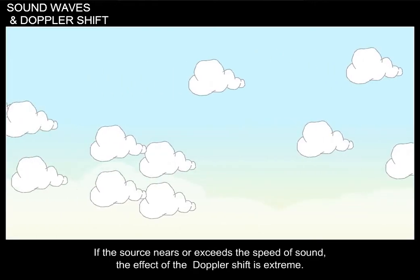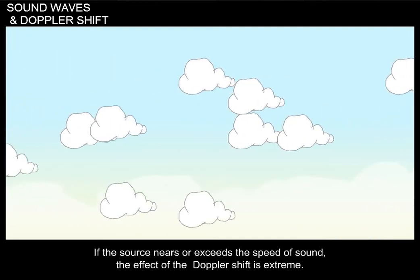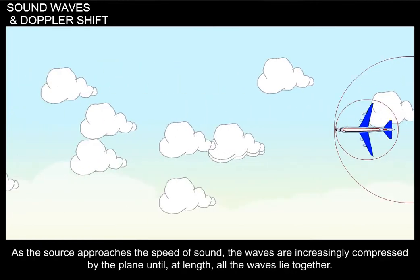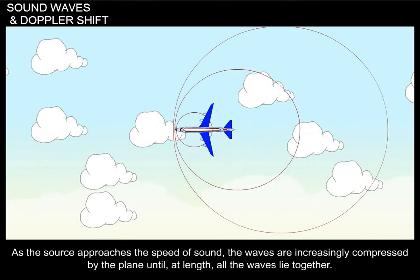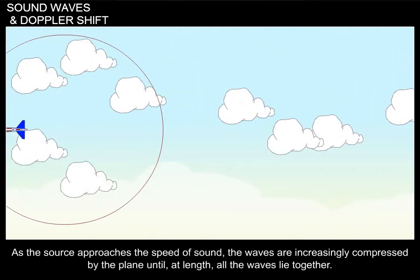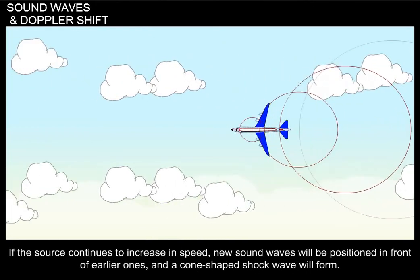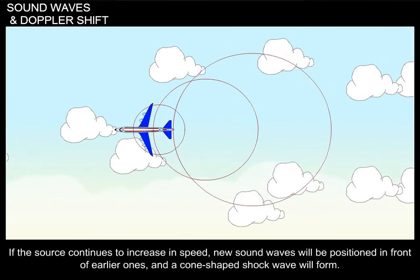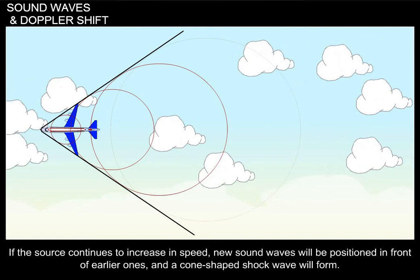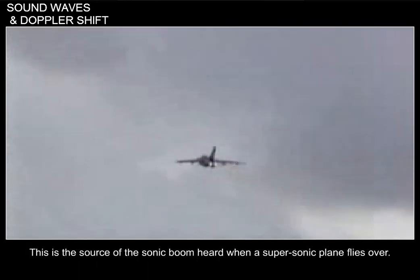If the source nears or exceeds the speed of sound, the effect of the Doppler shift is extreme. As the source approaches the speed of sound, the waves are increasingly compressed until all the waves lie together. If the source continues to increase in speed, new sound waves will be positioned in front of earlier ones, and a cone-shaped shock wave will form. This is the source of the sonic boom heard when a supersonic plane flies over.